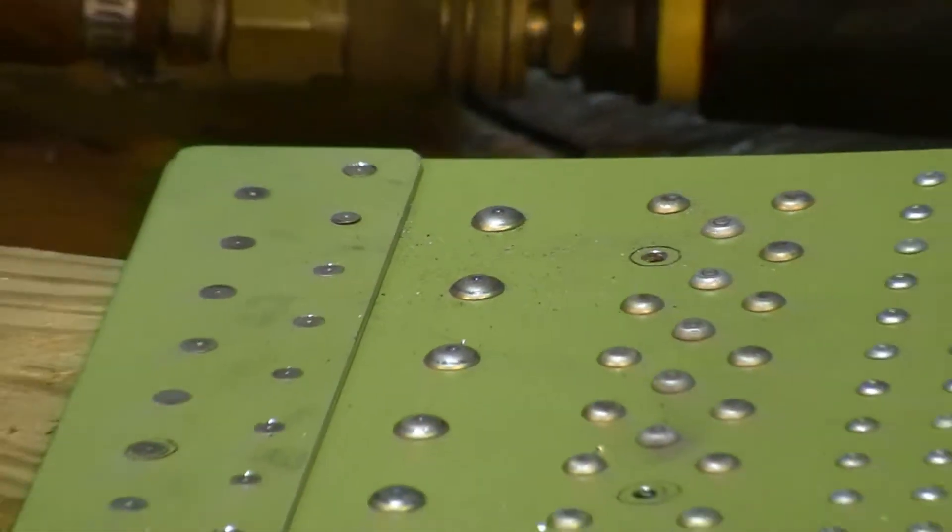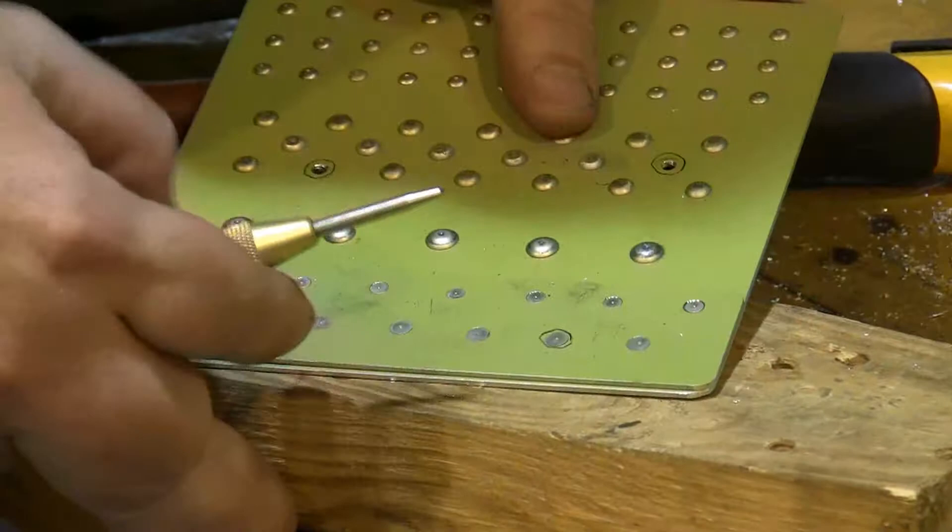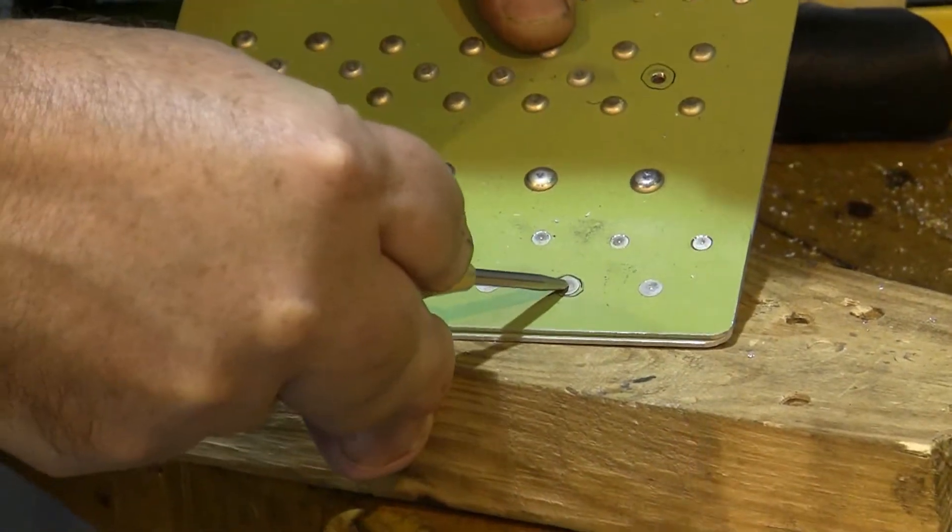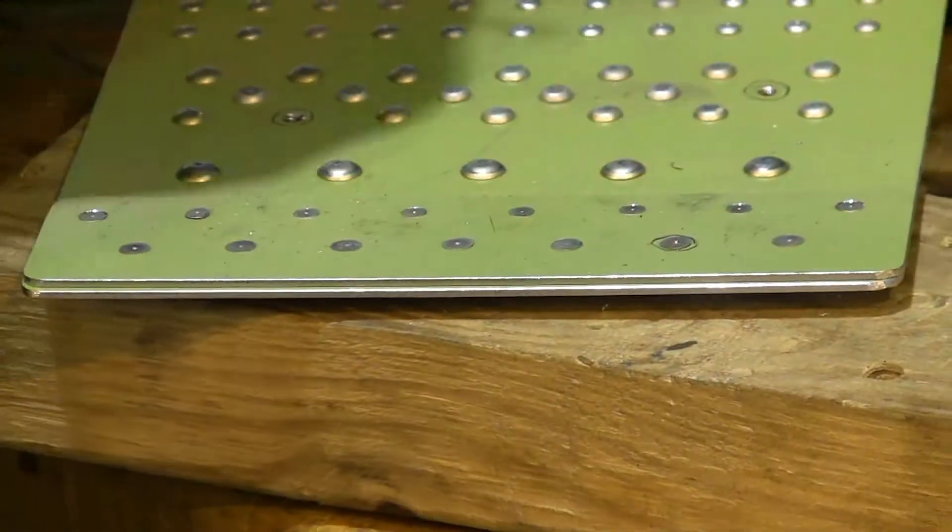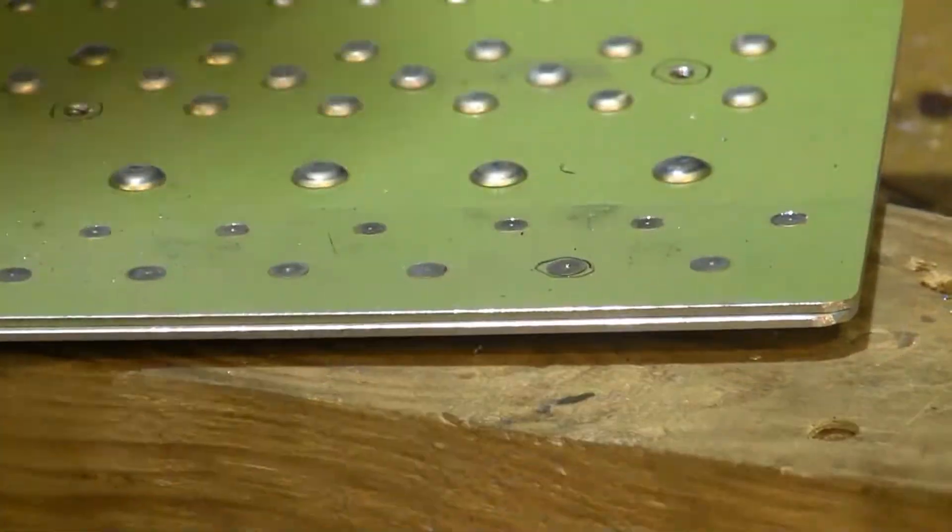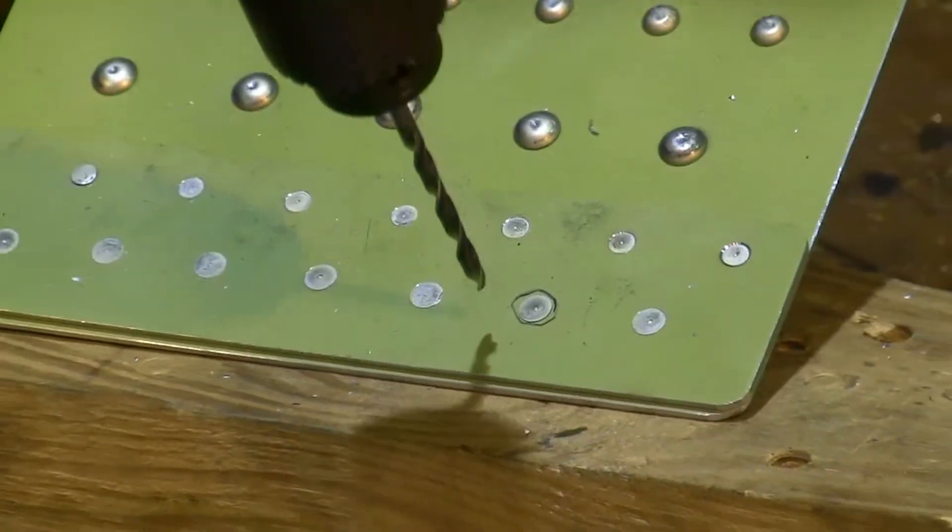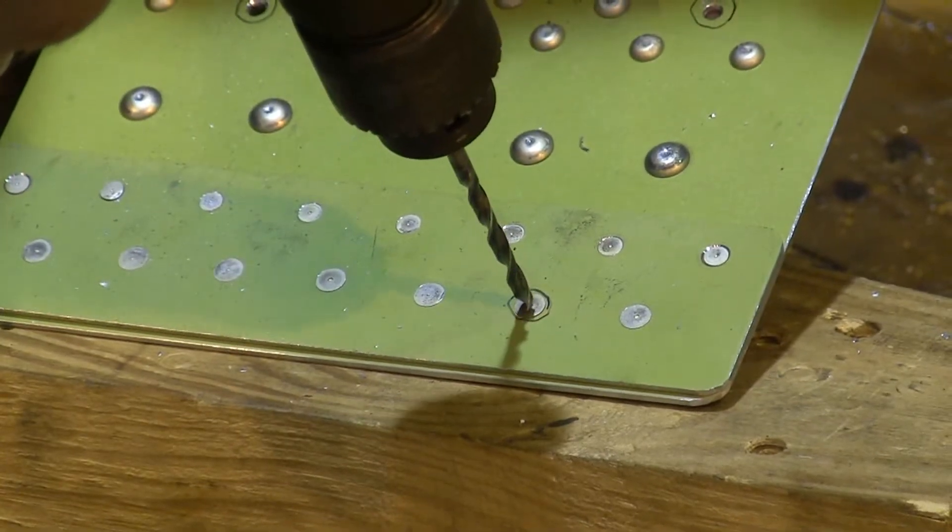The most difficult rivet to remove is the universal, or flush head rivet. For that flush head rivet, once again we're going to punch the center and now we're going to drill down. But it's hard to know where to drill down to because we've got to drill down to the base of the bevel, but not into the base metal.